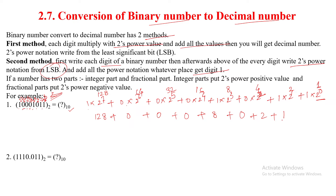Now add all the values: 1 + 2 = 3, 3 + 0 = 3, 3 + 8 = 11, 11 + 0 = 11, 11 + 0 = 11, 11 + 0 = 11, 11 + 128 = 139. So the answer is 139 in the decimal number system.